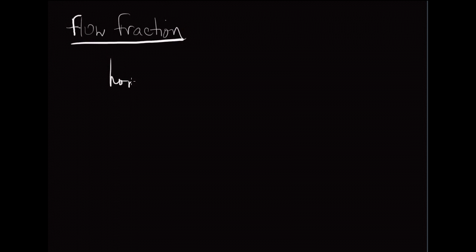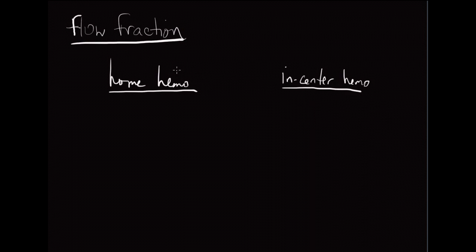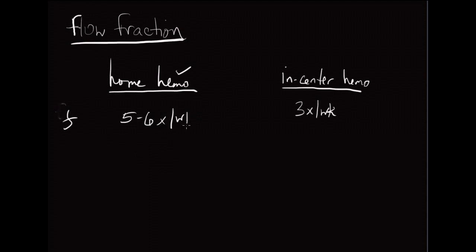Let's make a little table and go through some of the differences between a home hemo patient and an in-center patient, because there are a tremendous number of differences that will impact how you write a prescription. The first difference is frequency on dialysis. In-center patients usually come three times a week, while home hemo patients can do anywhere between five or six times a week — sometimes even seven days a week.